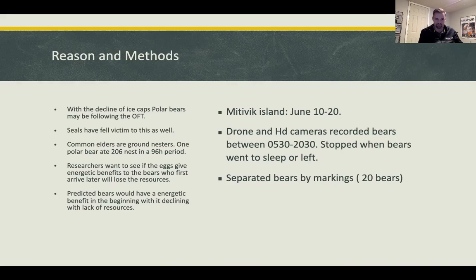Common eiders are ground nesters. One polar bear consumed 206 nests in a 96-hour period — that's a lot of eggs. The researchers wanted to see if these eggs could provide energetic benefits. They predicted that bears arriving first would benefit, but that resources would decline over time, eventually making foraging not worth the energy spent traveling to the site.